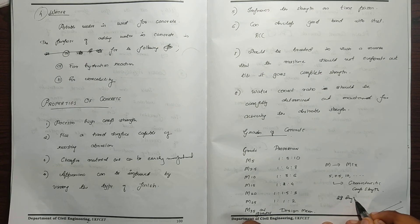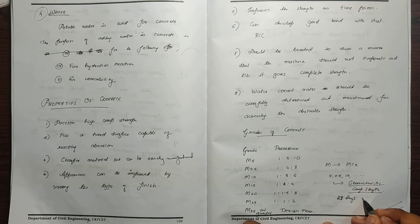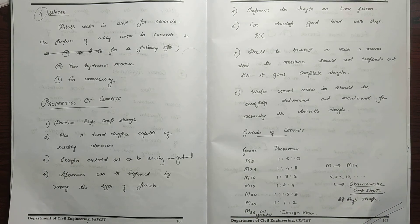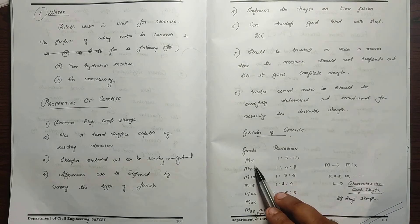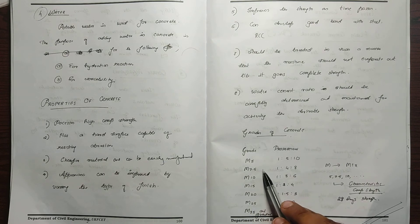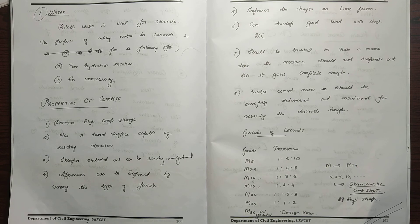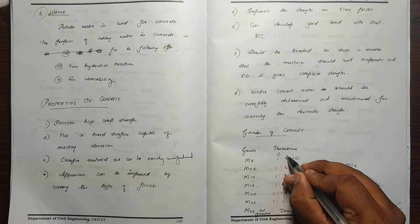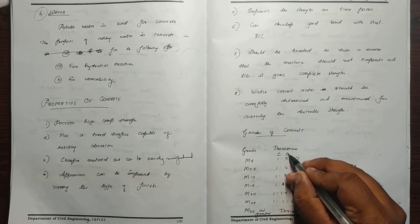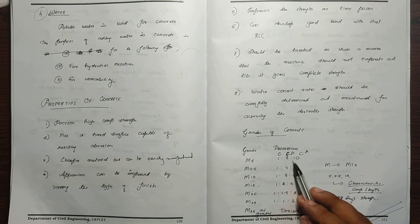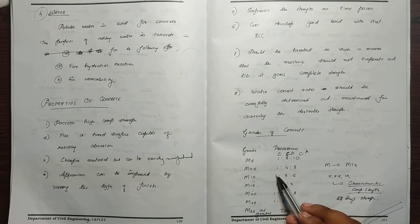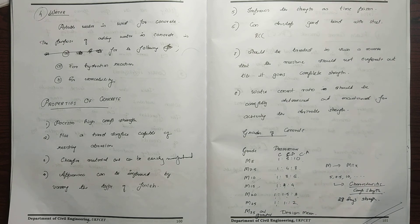The grade designation refers to the characteristic compressive strength tested in a compression testing machine, also known as the 28-day strength. M5 has a value of 5 N/mm², M7.5 is 7.5 N/mm², M10 is 10 N/mm², and M15 is 15 N/mm². The mix proportions are given as cement : fine aggregate : coarse aggregate — for example, 1:5:10, 1:4:8, 1:3:6, 1:2:4, 1:1.5:3.